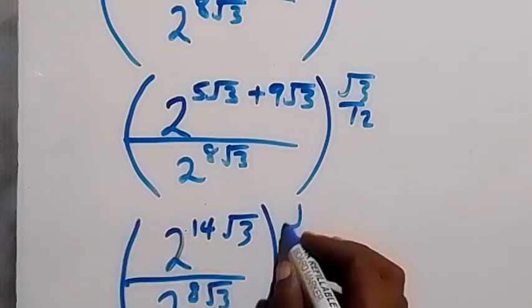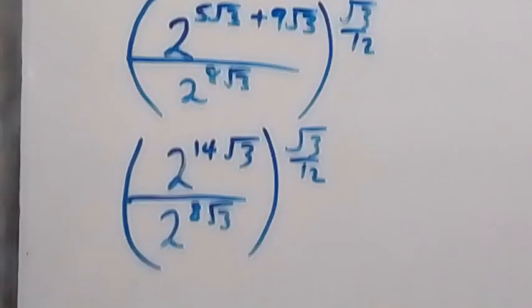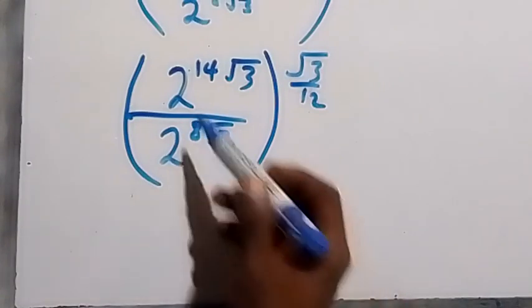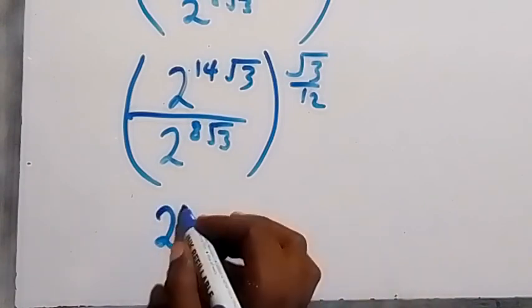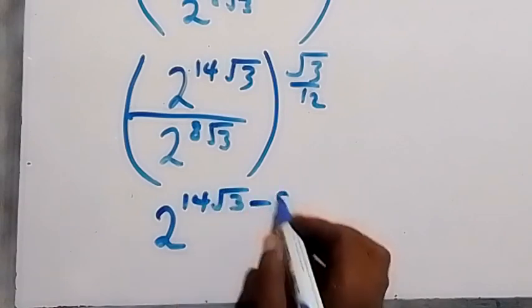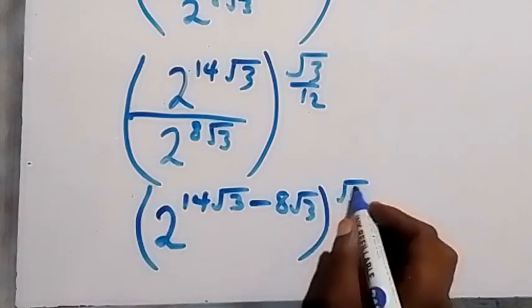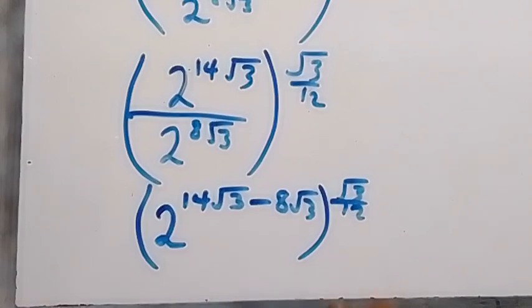Applying the law of indices again — since we have the same base and they are dividing, we subtract the powers. So we have 2 raised to power 14 root 3 minus 8 root 3, all raised to power root 3 over 12. Subtracting gives us 6 root 3.